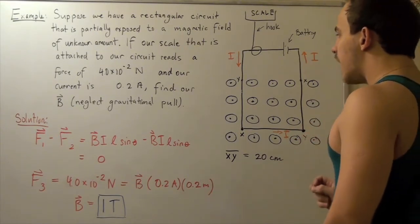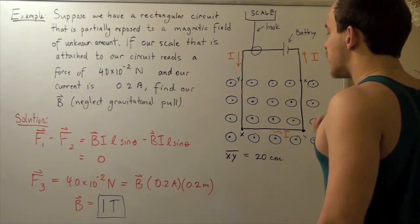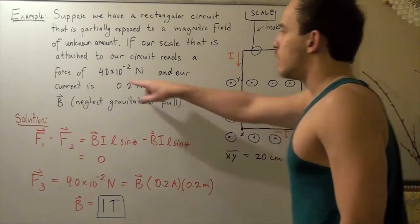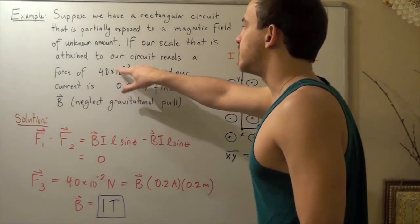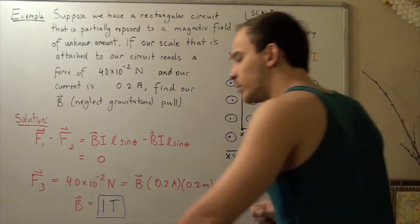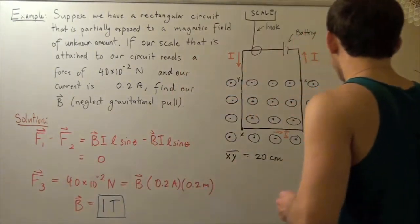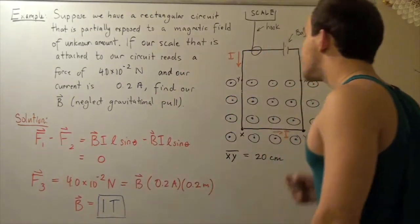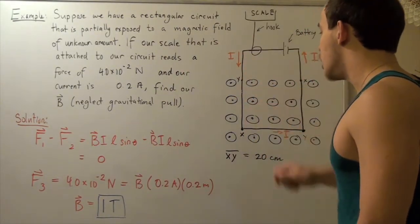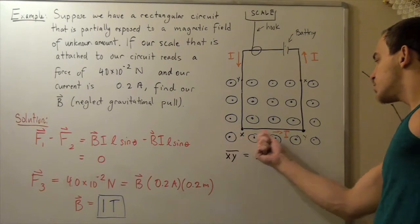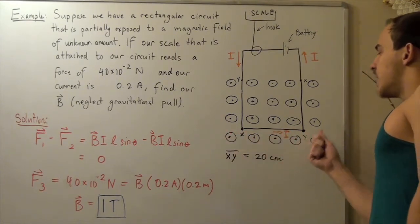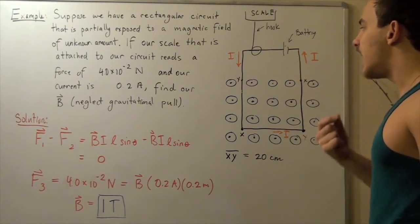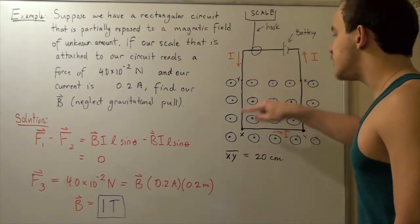So, we want to find what our magnetic field is, knowing that our force downward is 4.0 times 10 to negative 2. First, let's realize the following fact. Let's look at the different forces that our electric circuit feels. We have a current flowing downward on this side, on this section. We have a current flowing from x to y in this direction. And then, we have a current flowing upward in this section here. So, we want to find what the force is in each section.